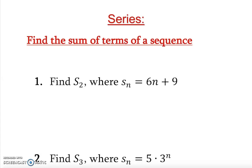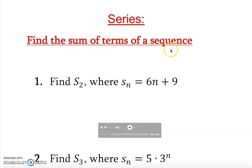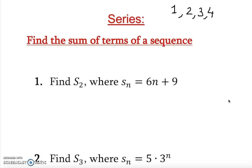In this video we're going to learn what a series is and how to find it. A series is basically the sum of the terms of a sequence. So if you have 1, 2, 3, 4 and so on — these are s₁, s₂, and so on — this is just a sequence.